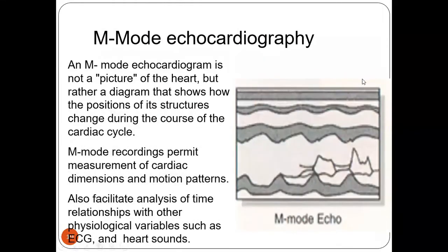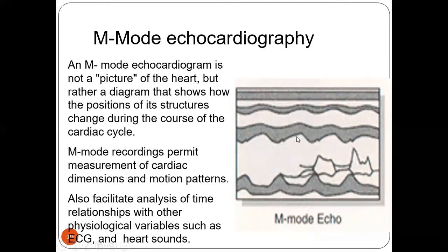M-mode echocardiography is activated by pressing the M-mode button on the echo machine. It provides measurements of the aorta, left atrium, and left ventricle. We can identify the interventricular septum and left ventricular posterior wall in systole and diastole. By measuring the dimensions in systole and diastole, we can calculate the ejection fraction. M-mode primarily helps in measurement of cardiac dimensions and motion patterns.